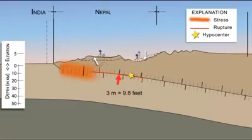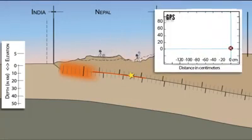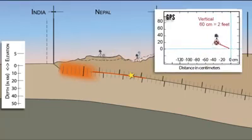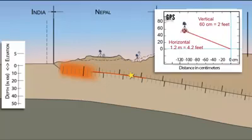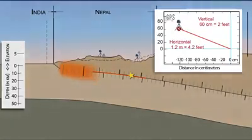Maximum displacement of 3 meters occurred on the megathrust about 20 kilometers north of Kathmandu, but the fault did not rupture to the surface. This displacement uplifted Kathmandu over 60 centimeters and moved the city 1.2 meters south towards India.